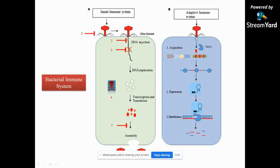The innate immune system in bacteria can be exemplified by restriction enzymes. The moment any foreign DNA enters a bacterium, it is digested by restriction enzymes or blocked by permeability barriers. Restriction enzymes randomly cut whatever DNA enters into small pieces at restriction sites. But this is innate — any foreign DNA that comes in gets cut. In the case of the adaptive immune system, bacteria have a very specific, well-evolved, structured immune system — like a memorized immune system. When a phage infects, bacteria incorporate part of its genome, and when it reinfects, they kill it — like memory B cells and memory T cells.